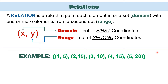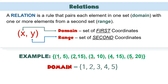Let us have an example. We have here a set of ordered pairs: (1,5), (2,15), (3,10), (4,15), and (5,20). Let us identify the domain and the range. For the domain, those are the first coordinates. Let us get all the first coordinates of each ordered pair. We have 1, 2, 3, 4, and 5. Therefore, 1, 2, 3, 4, and 5 are the domain.